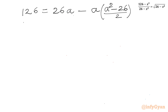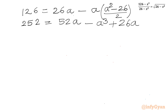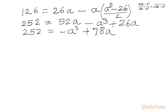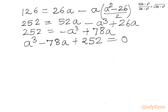Multiplying through by 2: 252 equals 52a minus a³ plus 26a, or 252 equals minus a³ plus 78a. Taking all terms to the LHS gives us the cubic equation: a³ minus 78a plus 252 equals 0.